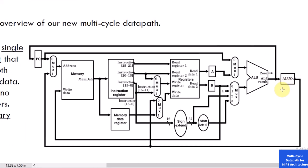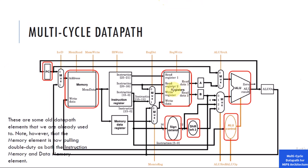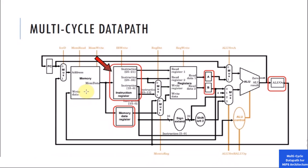Here is a general overview of our new multi-cycle datapath. As you can see, we now have a single memory element that holds both instructions and data. We have only a single ALU unit and there are no adders in this datapath anymore. We also have several temporary registers: an instruction register, and registers A and B are added here. There is one ALU output register, and a memory data register, which is new.